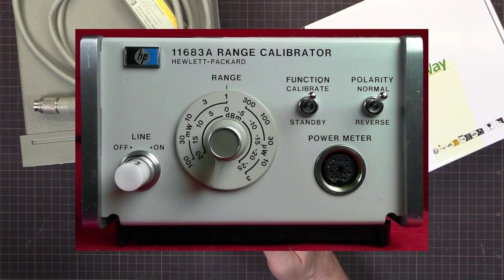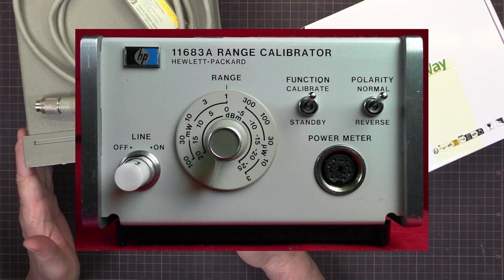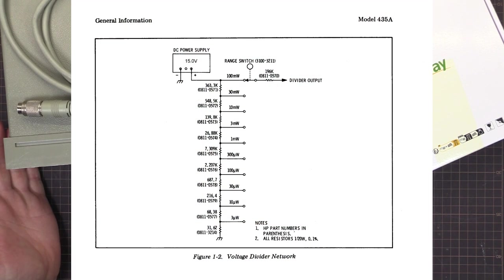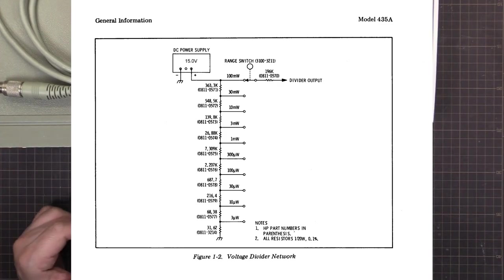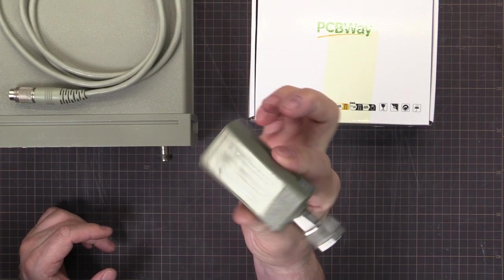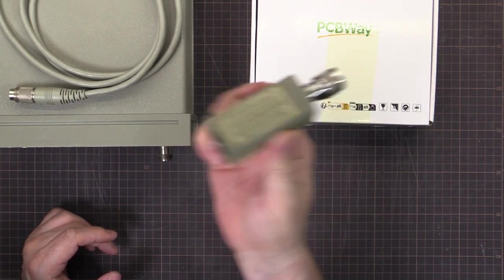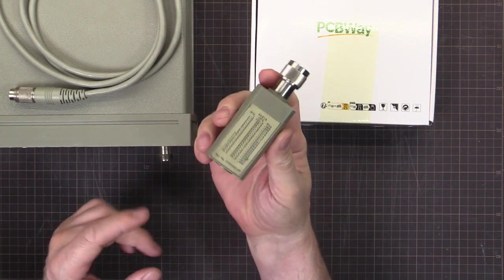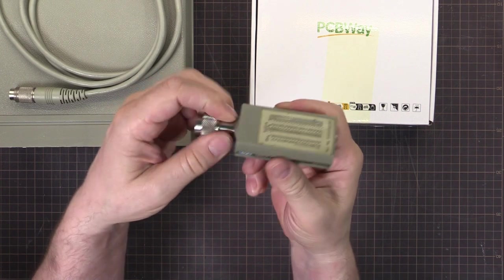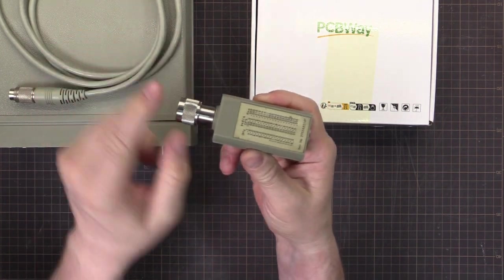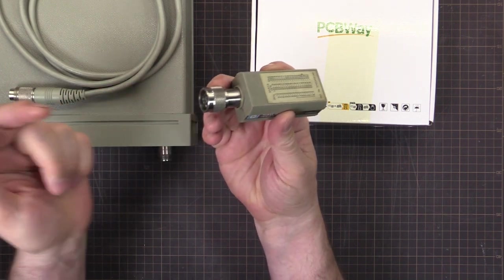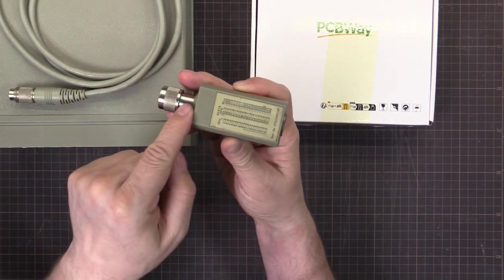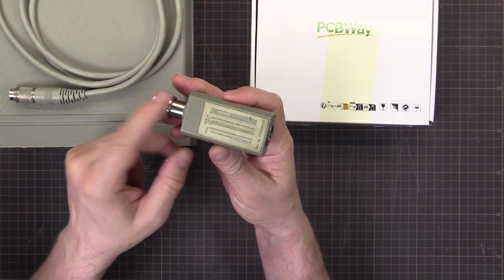They're called an 11683A range calibrator, but they're a very simple voltage divider, an adjustable voltage divider. The only tricky thing you need is you need a dead one of these, which they're pretty cheap. Then you input your signal. You basically take all the thermocouple stuff away - that's usually what dies in these.